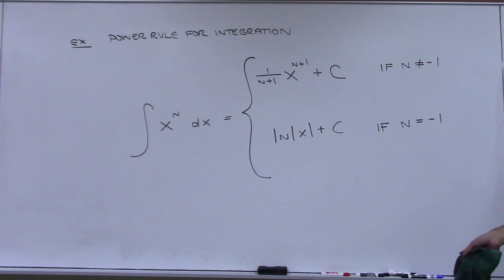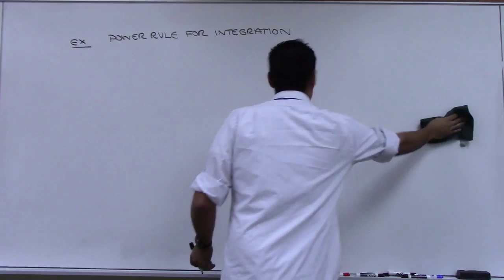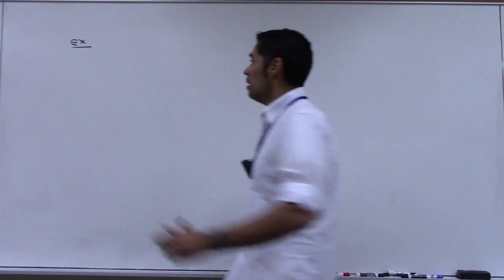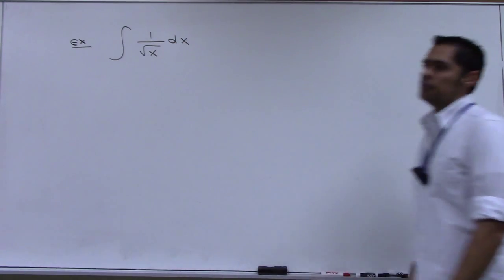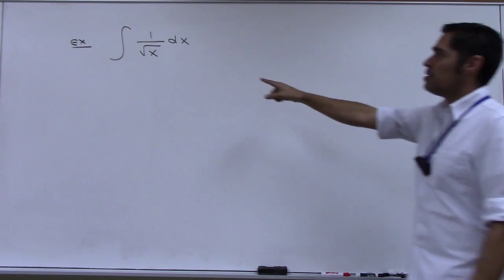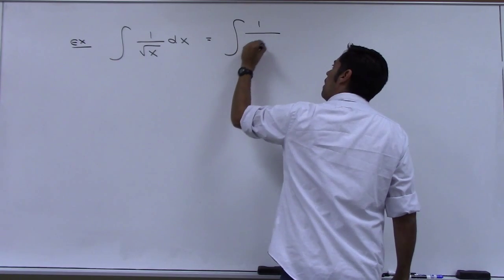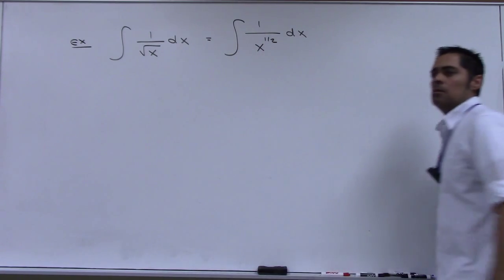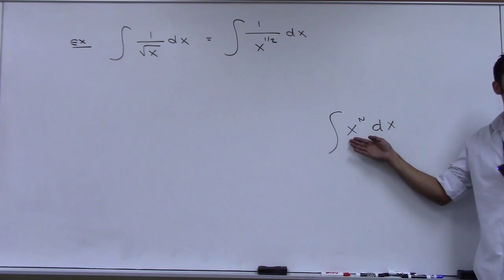Let's now see the power rule in action. What is the anti-derivative of 1 over the square root of x? Can I use the power rule here? Yes, as long as I can rewrite this as x to a power. It's 1 over x to the positive one-half. But the power rule requires x to be on top, so we move it up: x to the negative one-half. Now you can use the rule — and this is not the natural log case, so n equals negative one-half.